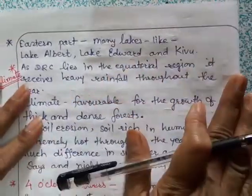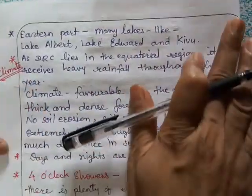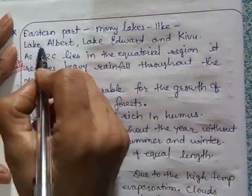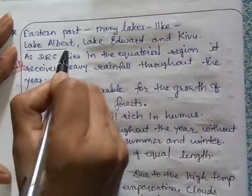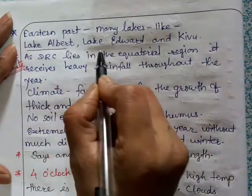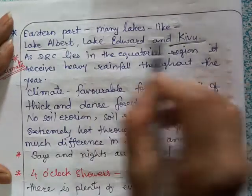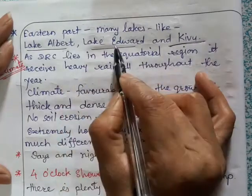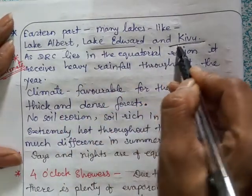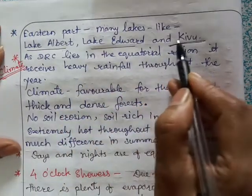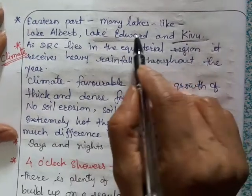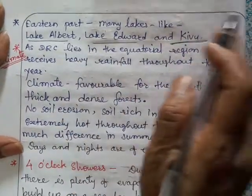In the eastern part of the country there are many lakes, such as Lake Albert, Lake Edward, and Lake Kewu. These lakes are located in the eastern part of DRC.